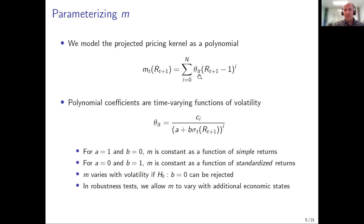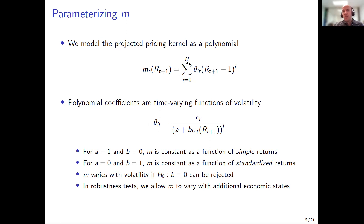The coefficients that control time variation in the kernel are a function of volatility, and we write down this specific functional form: each coefficient theta_i is a constant c_i divided by some function of volatility. Specifically, it's a linear function of volatility raised to the power i. This looks exotic but it nests two very interesting special cases.